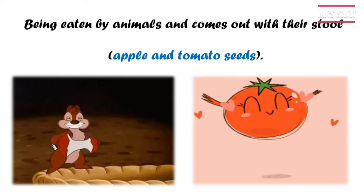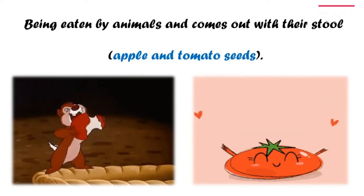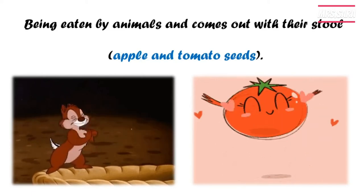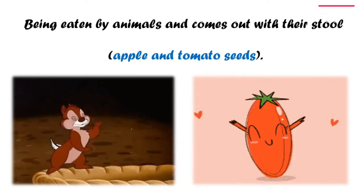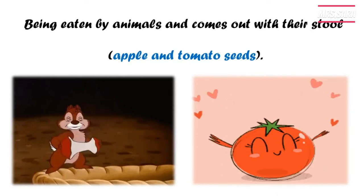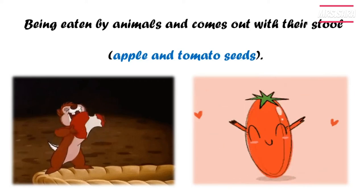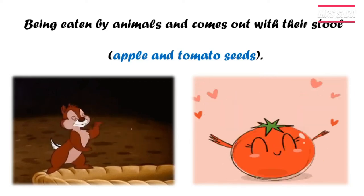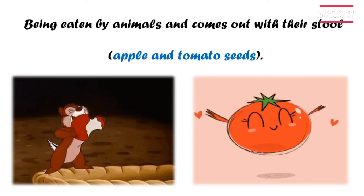Our last way of seed dispersal is by being eaten by animals and coming out with their stool. Animals eat apples with their seeds and they eat tomatoes with their seeds. So our examples here are the apple seed and the tomato seed.